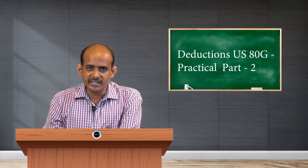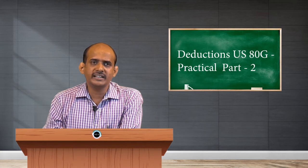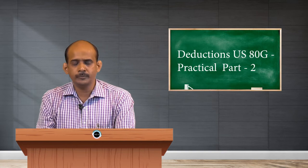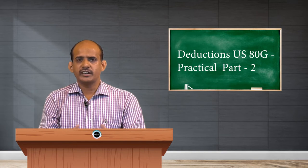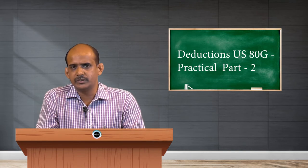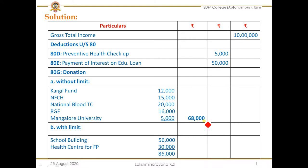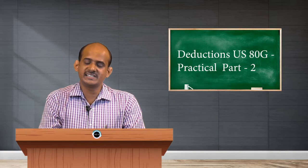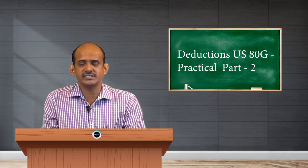Before 80G, we have 80D. Under 80D, which is for medical insurance premium, if information is not provided about 80D, there is one clause regarding preventive health checkup. Though the assessee has not taken any medical checkups in the previous year, without producing any evidence or document, he can claim a deduction of rupees 5,000 for preventive health checkup. As it is a standard deduction, we will definitely deduct that from the total income. So under 80D, the preventive health checkup deduction of rupees 5,000 is applied.